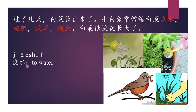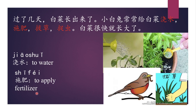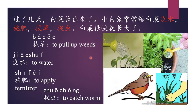小白兔常常給白菜澆水。 澆水 means to water. 施肥 means to apply fertilizer. 拔草 means to pull up grass. 捉蟲 means to catch worms. 小白兔常常給白菜澆水、施肥、拔草、捉蟲。 The little white rabbit often watered the cabbage, applied fertilizer, pulled up the grass, and caught worms. 白菜很快就長大了 — The cabbage quickly grew up.